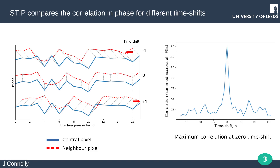STIP compares the correlation between phase time series of neighbouring pixels for different time shifts. In the left panel we can see the neighbouring pixel being shifted by different amounts to the left and right. The right panel shows the summed correlation between the time series for the possible time shifts. In this case, the correlation is maximum when the time shift is zero. This tells us that the pixels have similar time series, and the neighbouring pixel becomes a sibling of the central pixel.